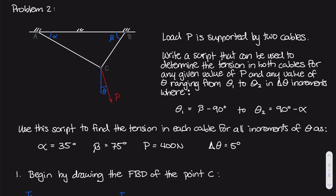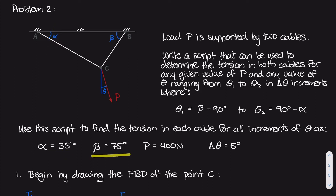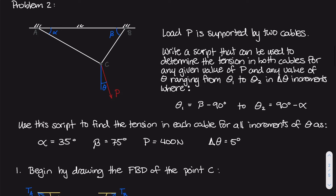For this particular problem, our load P is 400 newtons, angle alpha — the angle cable A makes from the horizontal — is 35 degrees, and beta is 75 degrees. The very first place to start when dealing with any system in static equilibrium is a free body diagram.